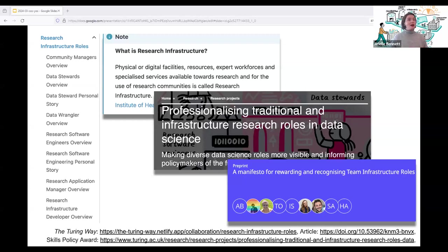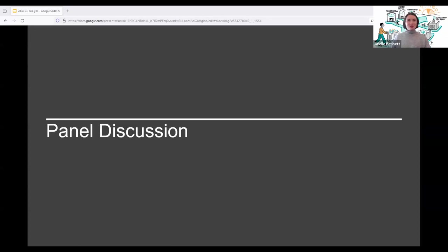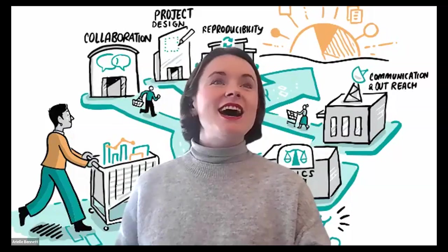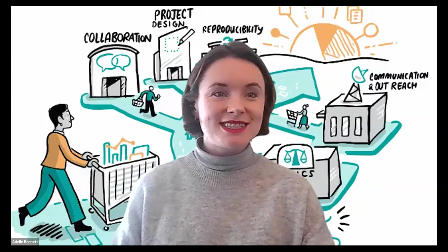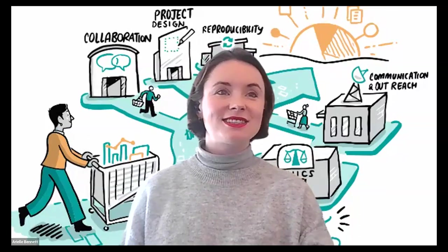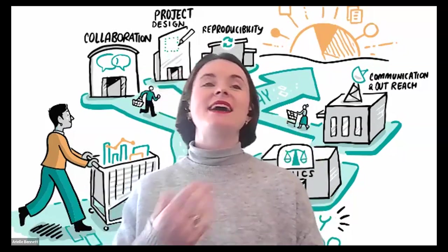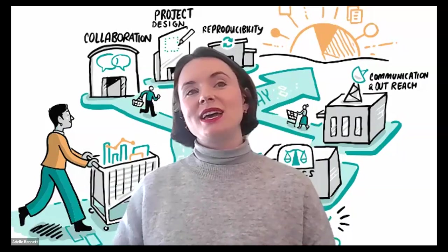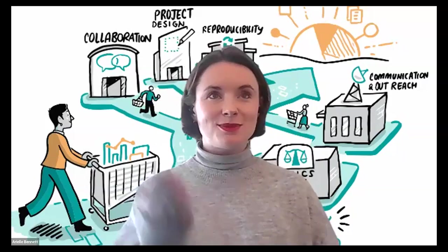None of this work is in a vacuum. I'd also like to highlight the ongoing work of organizations such as the various research software engineering societies across the globe, the Center for Scientific Collaboration and Community Engagement, and the Hidden Ref — just three examples of numerous organizations all working on aspects of recognizing, professionalizing and rewarding these critical roles. With that whistle-stop tour through the Turing Way and a brief overview of research infrastructure roles, I'm delighted to be moving to a panel discussion. I'd like to ask our panelists to introduce themselves and respond on how they and their organizations have been advocating for diversifying roles in research and data science. Sandra, I'd be delighted to start with you.